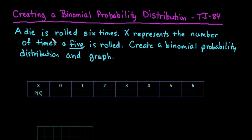So what we have here is a die is rolled six times. X represents the number of times a five is rolled. Create a binomial probability distribution and a graph. The reason that I know it's binomial is remember with binomial you have to do it for a fixed number of trials, so this tells us that we're going to roll the die six times so that's our fixed number of trials.